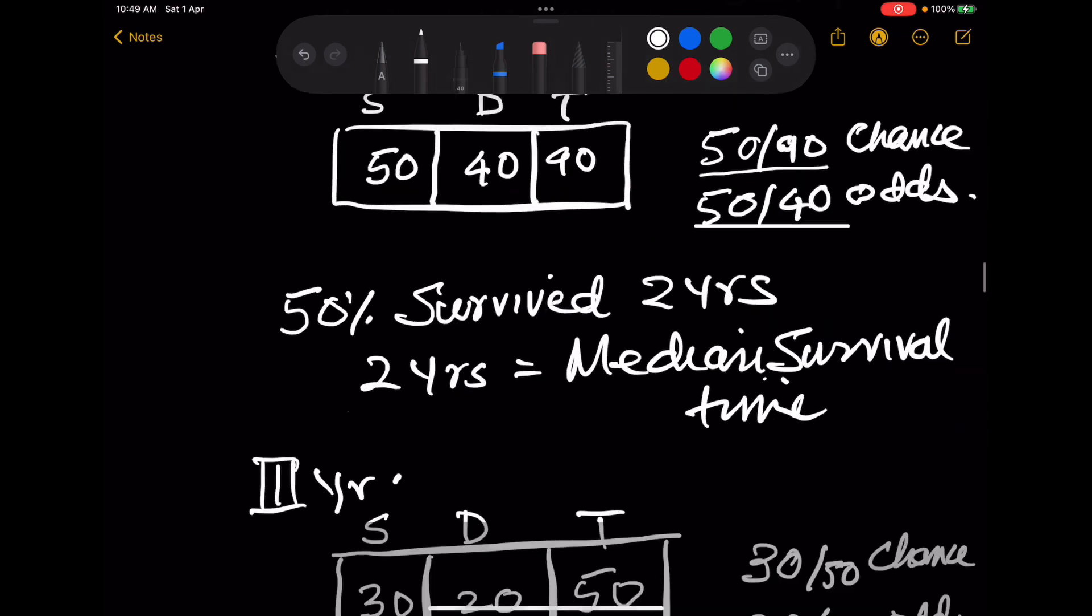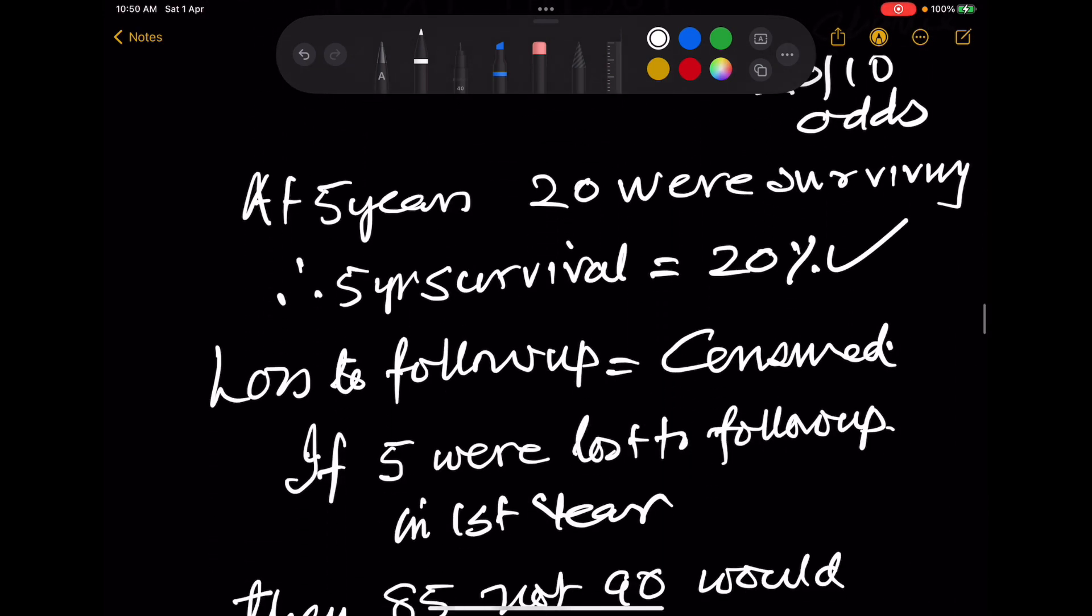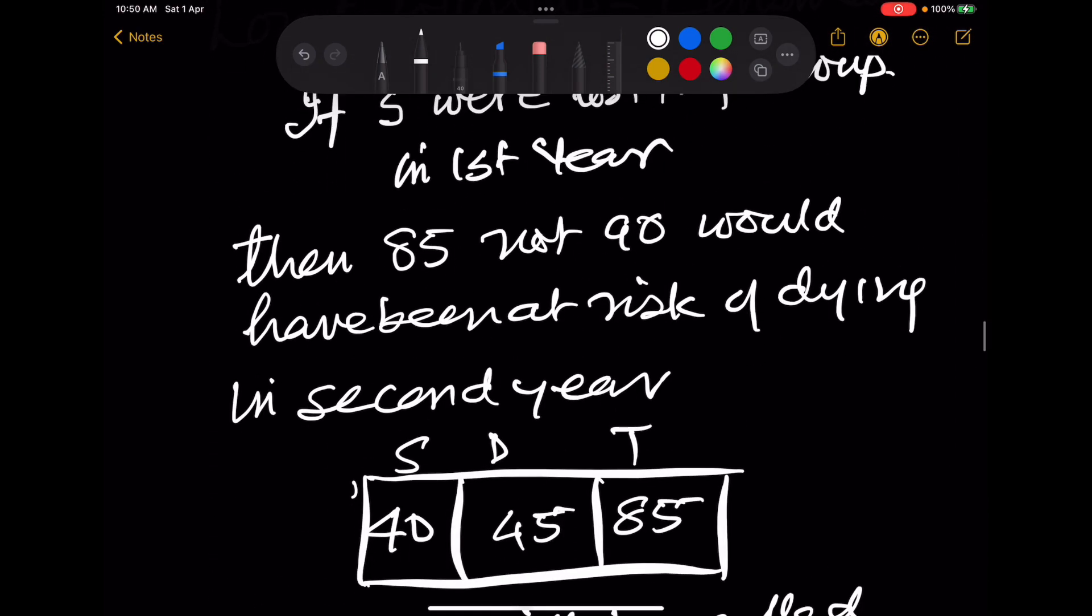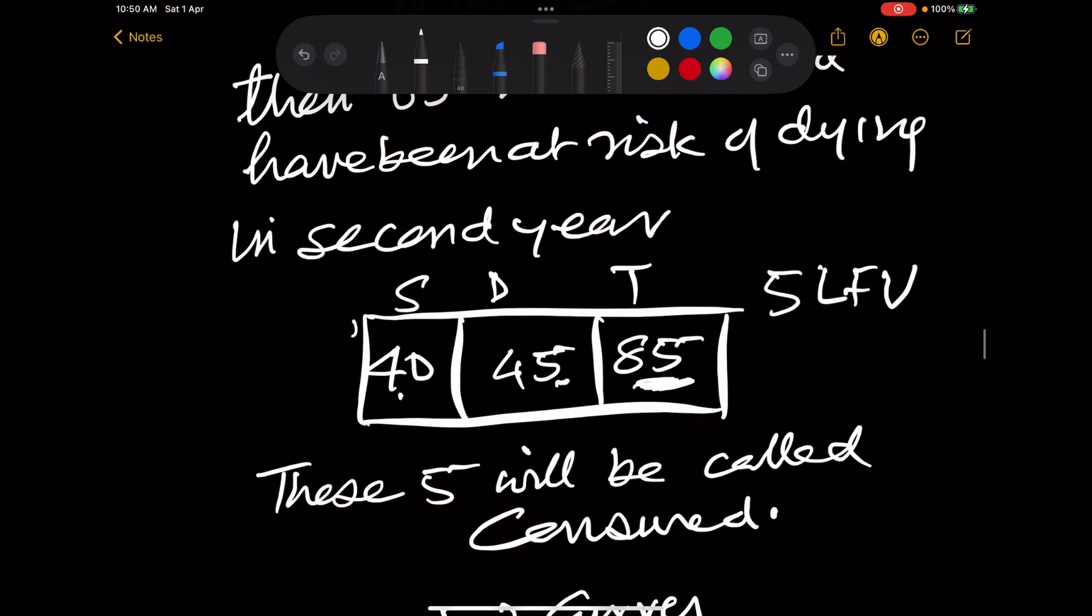And here the table would become thus: 85 would become the denominator. 40 would have survived, 45 would have died, 5 we do not know—lost to follow up. So there is a method of controlling lost to follow up in a survival curve, and that is known as censoring, and that data is called censored.